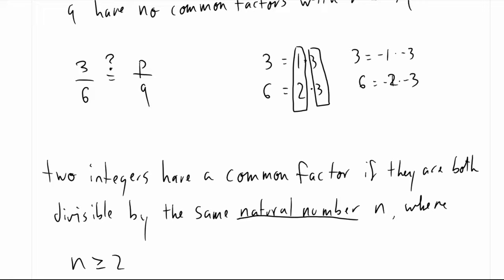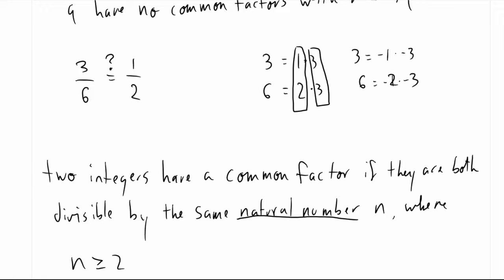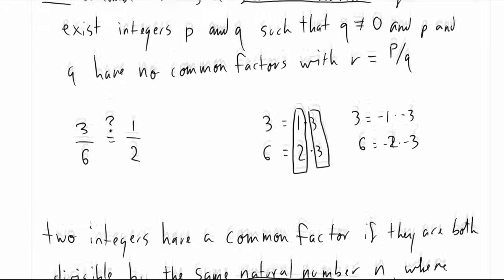To finish showing that 3 divided by 6 is a rational number: 3 divided by 6 equals 1 divided by 2, and the only integer that divides into both 2 and 1 is 1. So 1 over 2 is a completely reduced form of 3 divided by 6. Because 3 divided by 6 is equivalent to a completely reduced form, that tells us 3 divided by 6 is rational.